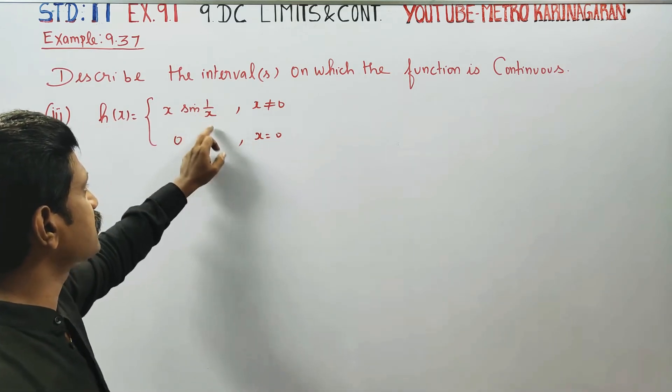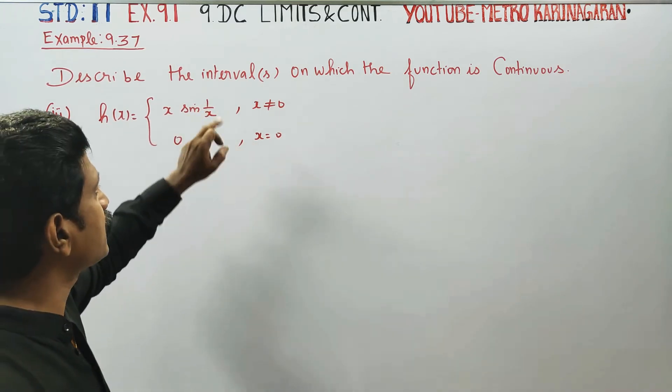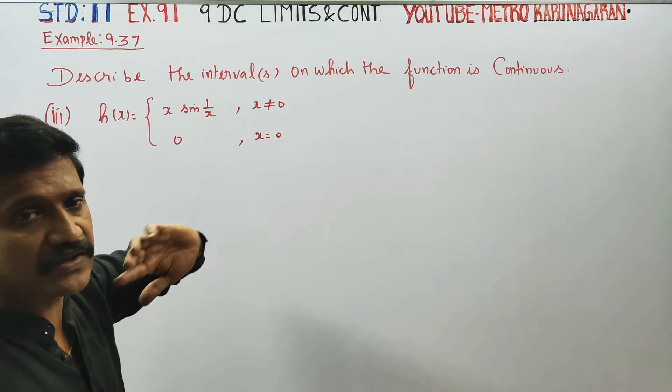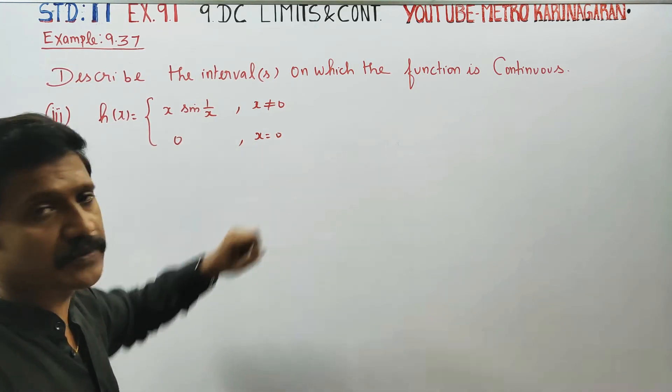If 1/x is problematic — 1/0 is undefined — that is why we check the zero of the function.